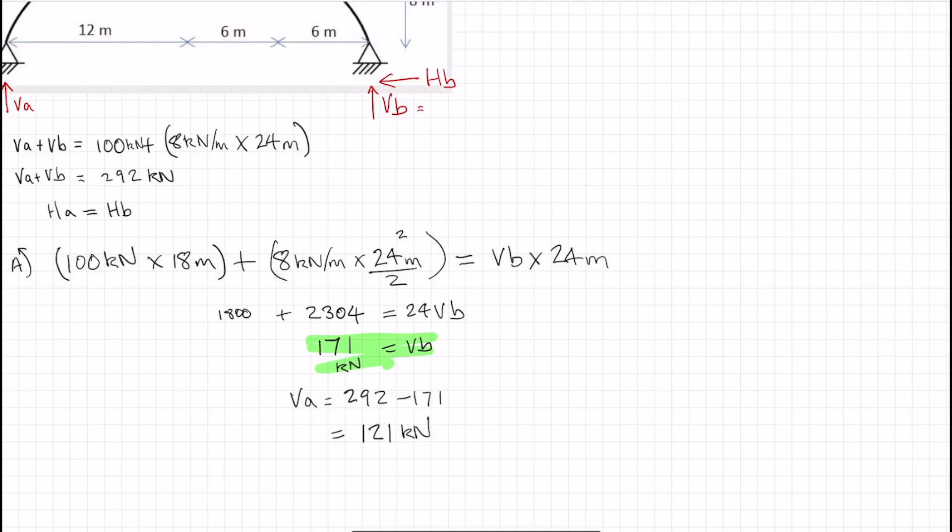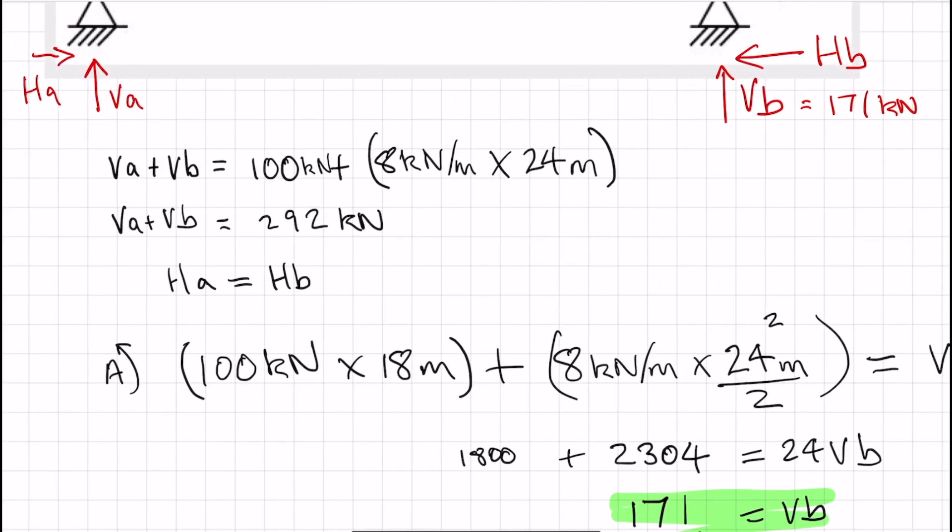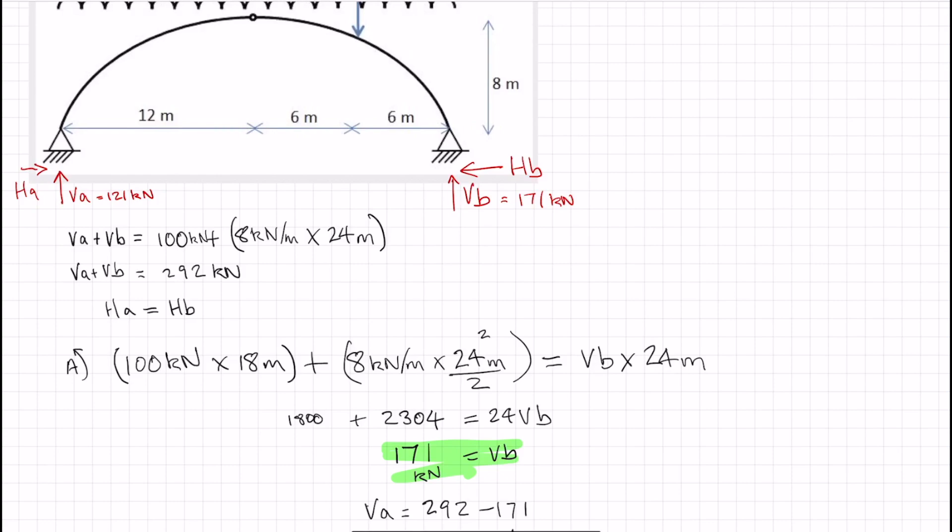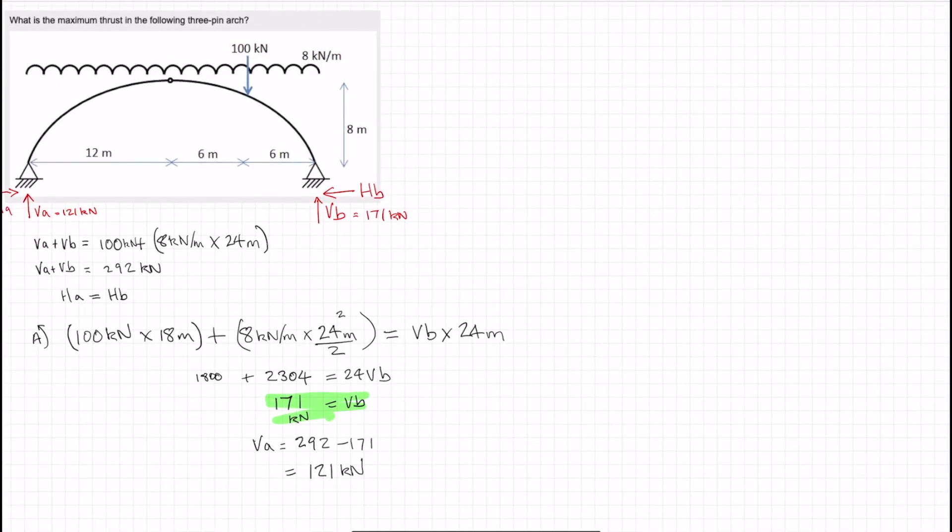VB, that is 171. And this is 121 kilonewtons. Now we know that HA and HB are going to be the same. For the maximum thrust, we're going to look at the right-hand side because the vertical force is higher on the right than the left. So let's take moments about the pin in the middle because we still need to find the horizontal reactions.